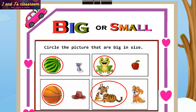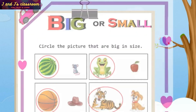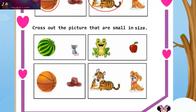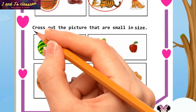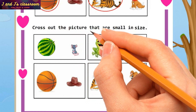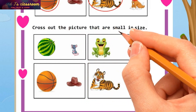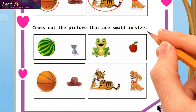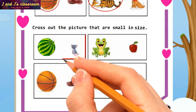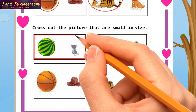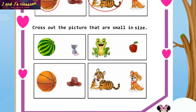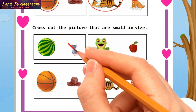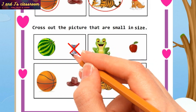Now we have done the first part with big. Next, cross out the picture that is small in size. See the first box — watermelon and rat. Which one is small in size? Rat! Yes, cross out the rat.